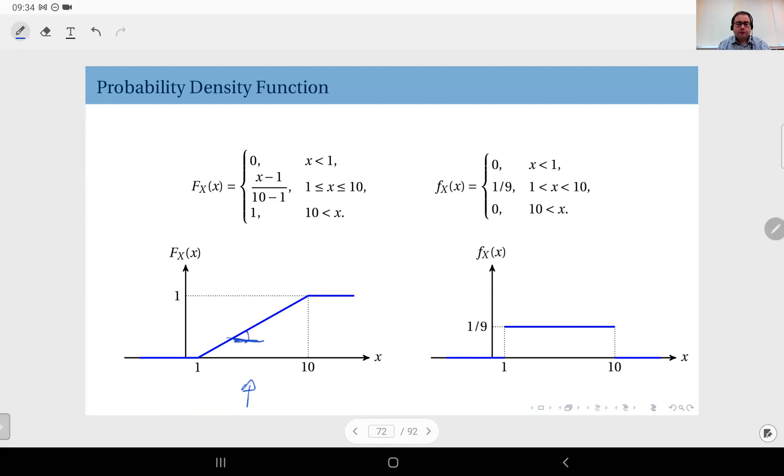So the slope of this portion - well, the derivative - by definition the slope of a line is its derivative, and in this case it's constant. If you take the derivative of this, (x minus 1) over 9, it's 1 over 9.